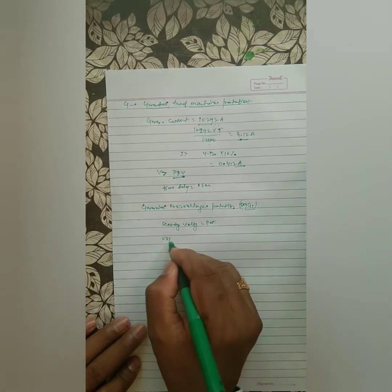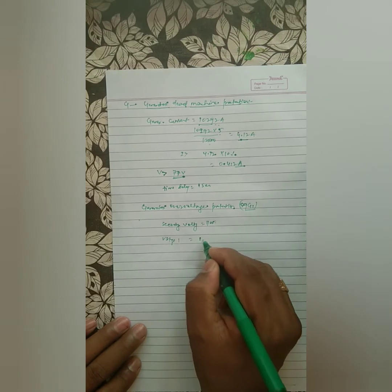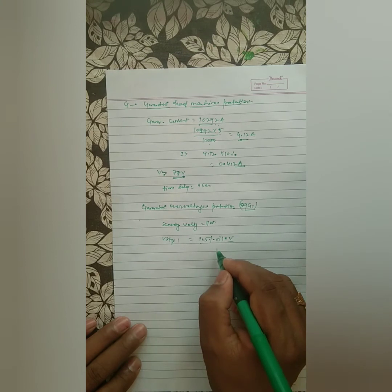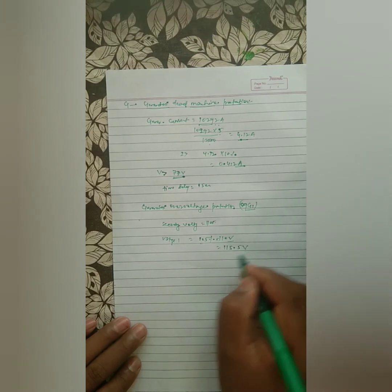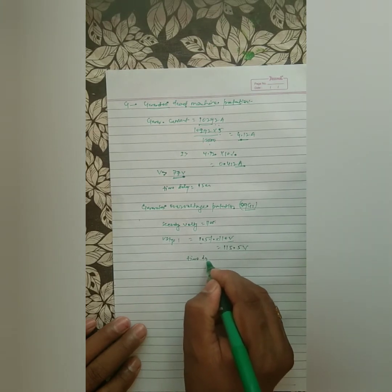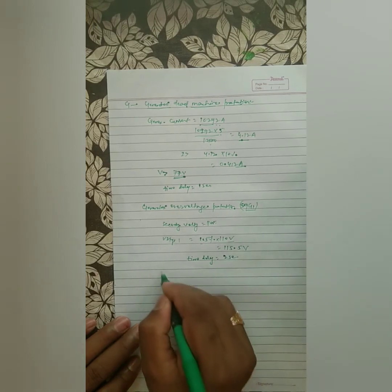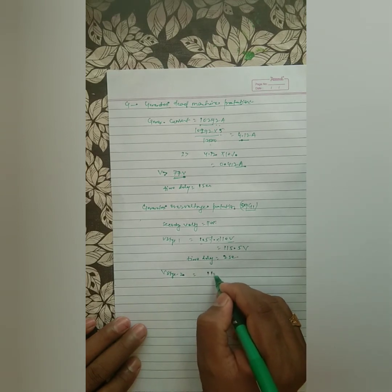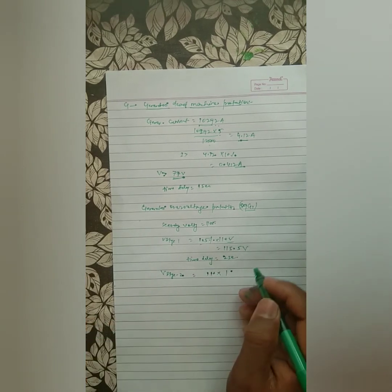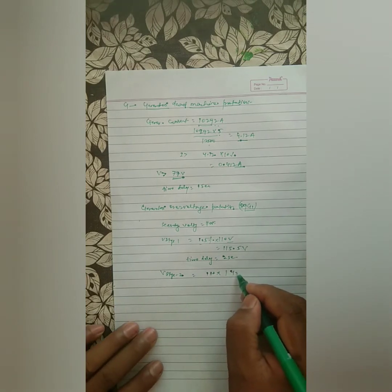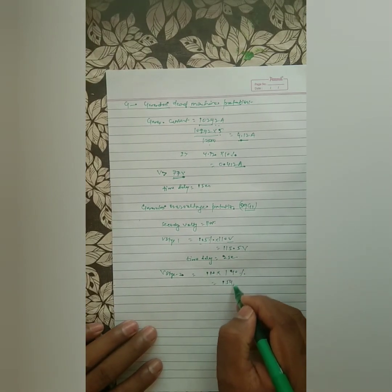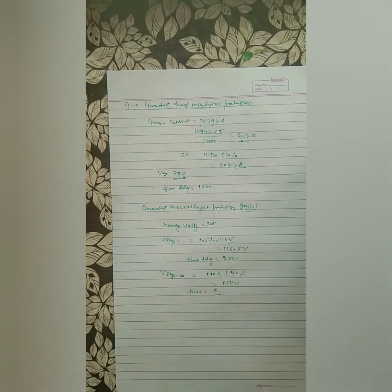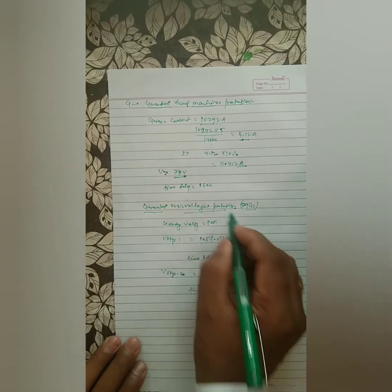For generator over voltage protection: Stage 1 is set at 105% of 110 V ≈ 115.5 V with a time delay of 2 seconds. Stage 2 is set at 140% = 154 V with a time delay of 0 seconds (instantaneous). This is a straightforward calculation for generator over voltage protection.